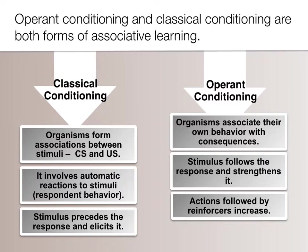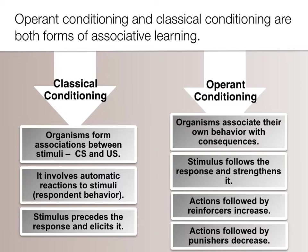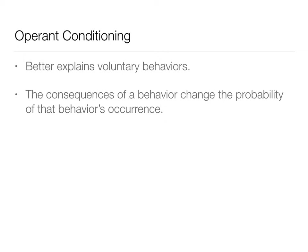Actions followed by punishers are less likely to happen — they decrease. We'll talk about how reinforcement works a ton better than punishment. Operant conditioning is really useful for voluntary behaviors, whereas classical conditioning covers behaviors we don't necessarily have control over. The consequences happening after the behavior change the probability of that behavior happening again.